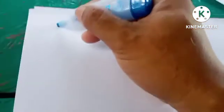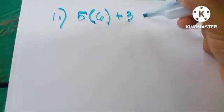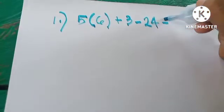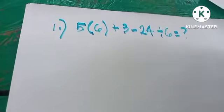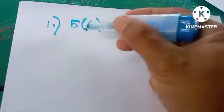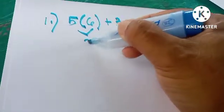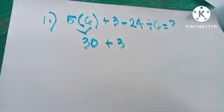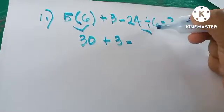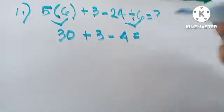For example, sample number 1: 5 times 6 plus 3 minus 24 divided by 6. What is our answer? Applying the EMDAS rule, we have multiplication first. So we simplify 5 times 6, which gives us 30. We cannot add 30 to 3 first — we will simplify the division operation next. 24 divided by 6 gives us 4.